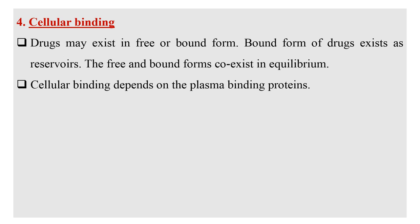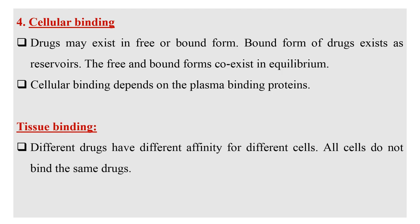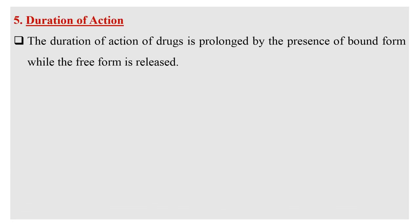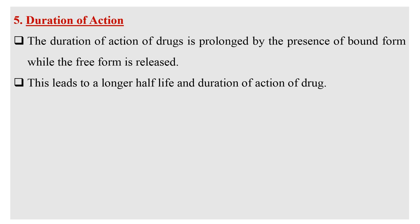Cellular binding entirely depends upon plasma protein binding. Different drugs have different affinity for different cells; all cells do not bind the same drug. The duration of action of a drug is prolonged by the presence of the bound form while the free form is released. This leads to a longer half-life and duration of action of a drug.